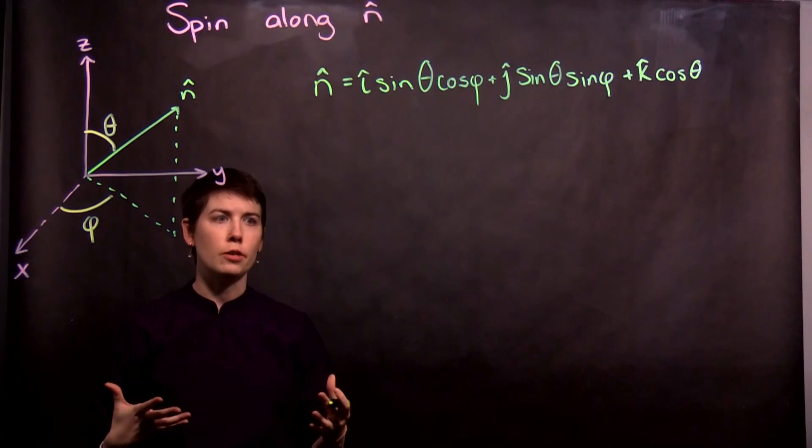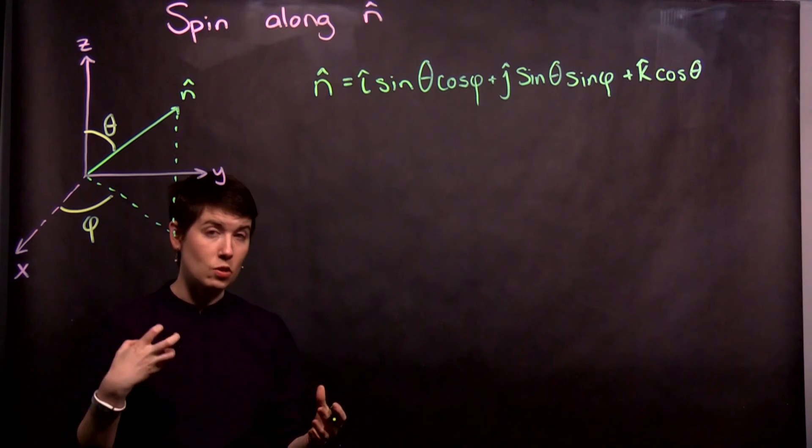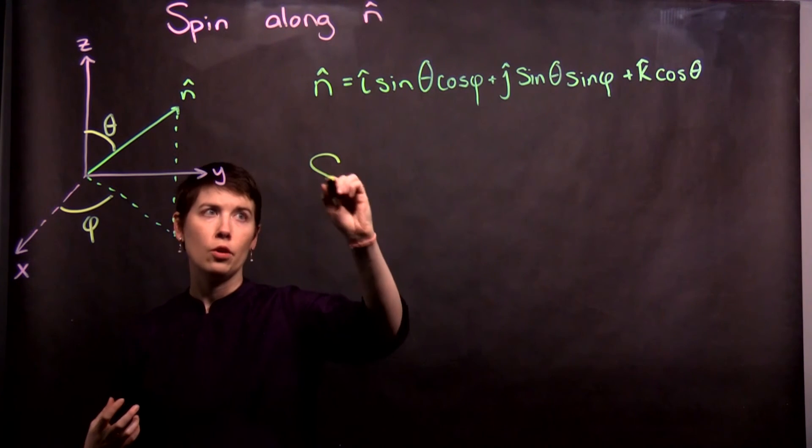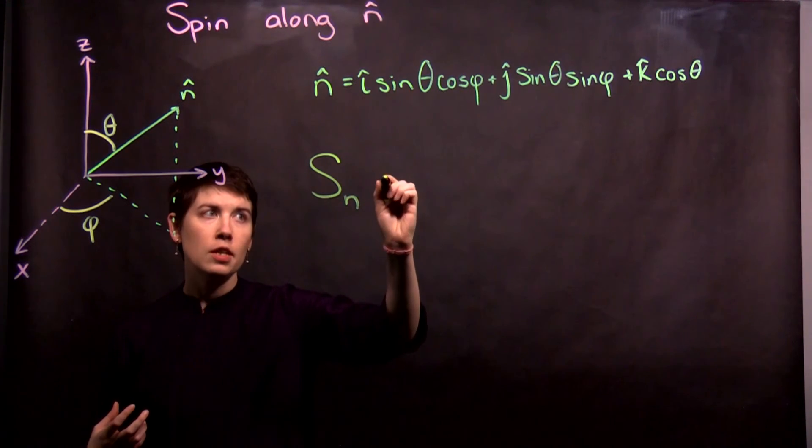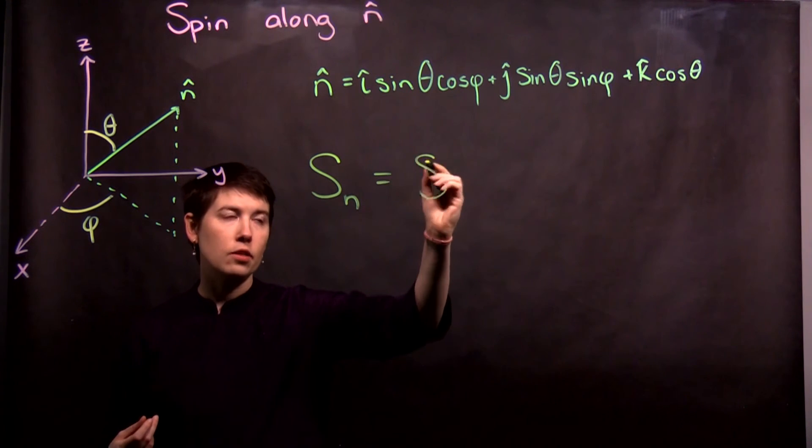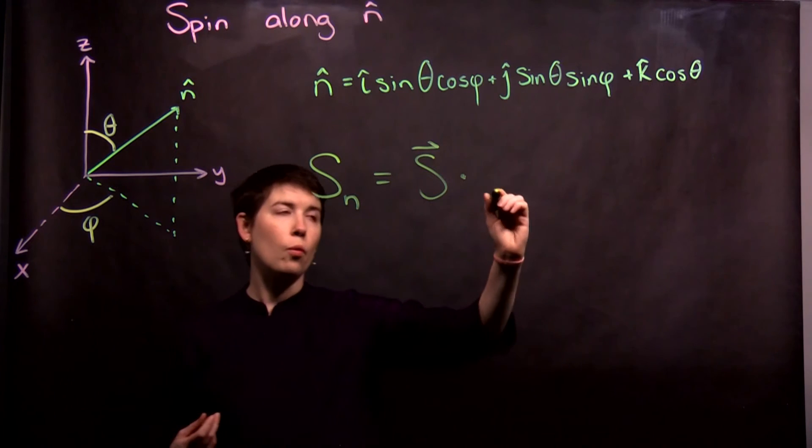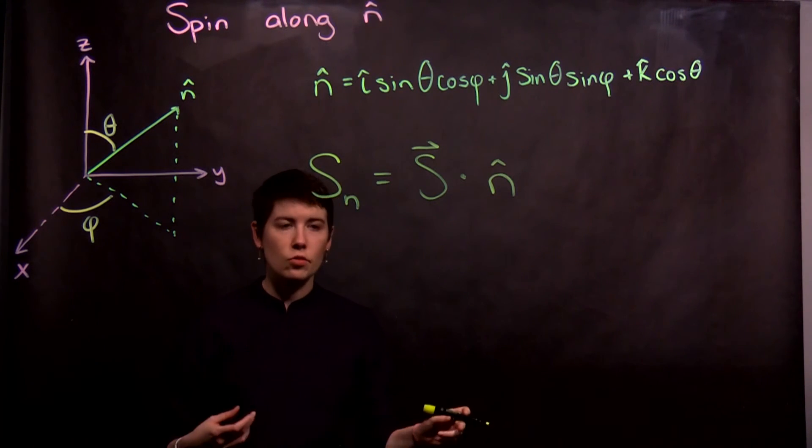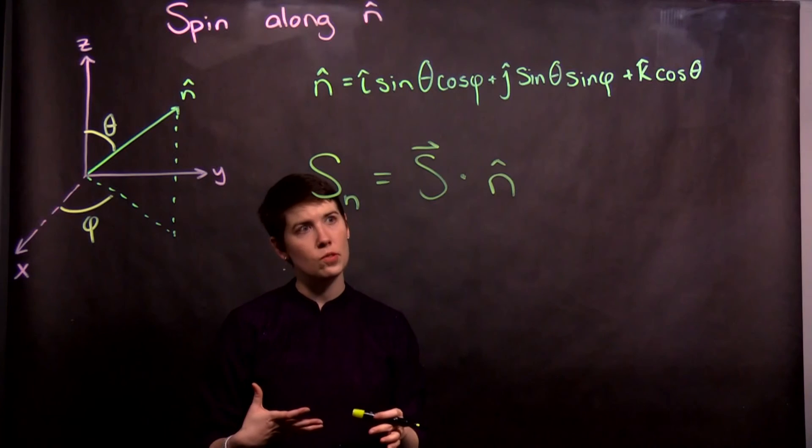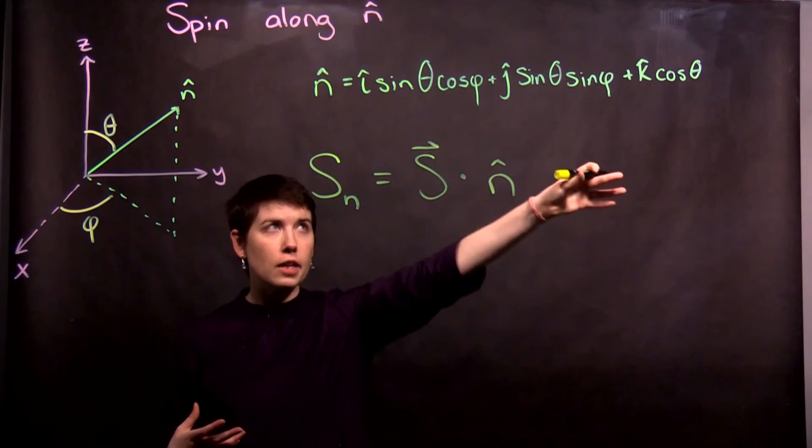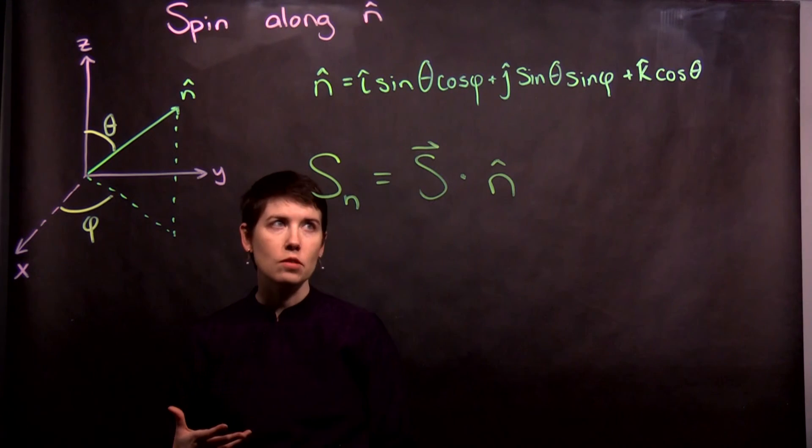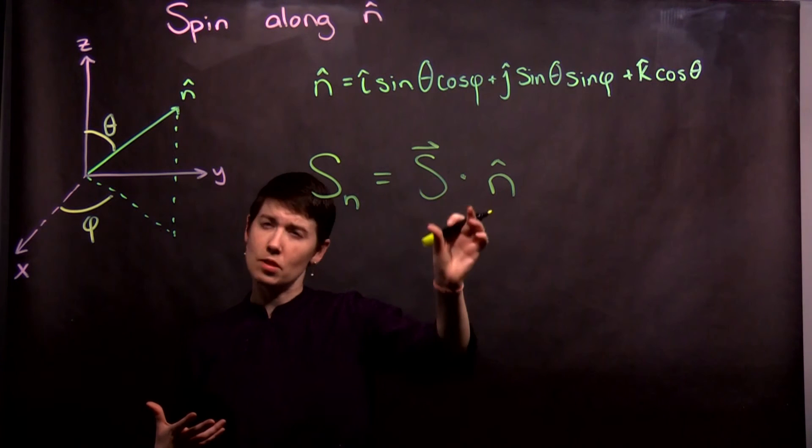So then, if we want to measure the direction, the spin direction, in n, what we actually do is take the dot product of s with n. And there's a few different ways to think about this, but we've set up here what n is, and then the next thing is to say, well, what is this going to be?